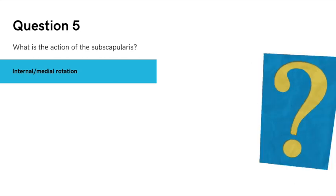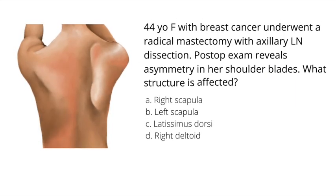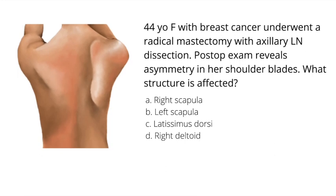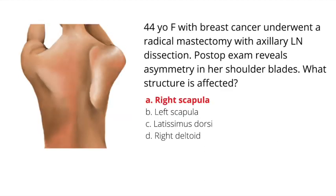Now two NBME-style questions. A 44-year-old female with breast cancer underwent a radical mastectomy with axillary lymph node dissection. Post-op exam reveals asymmetry in her shoulder blades. What structure is affected? A. Her right scapula, B. Her left scapula, C. The latissimus dorsi, or D. The right deltoid. The answer is A — the right scapula is winged. Remember salty wings: SA for serratus anterior, LT for long thoracic nerve, and injury to these structures causes a winged scapula.